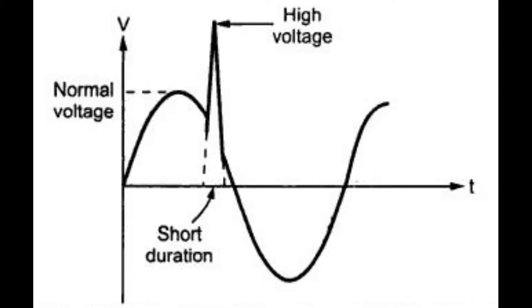So, we use MOV in our circuit. Once these voltage spikes arise in the circuit, the resistance of MOV decreases and the current starts flowing through our MOV. And our circuit will be protected.